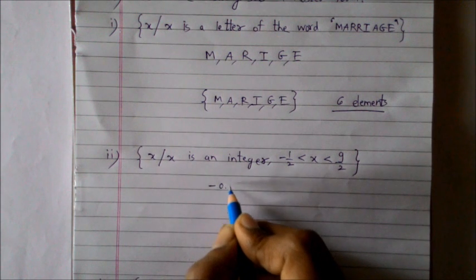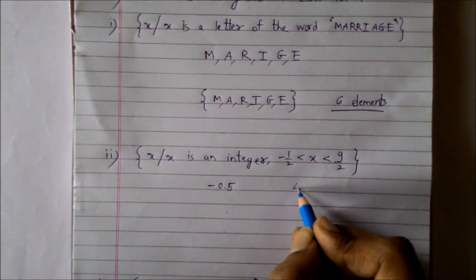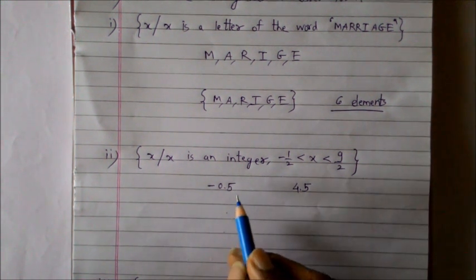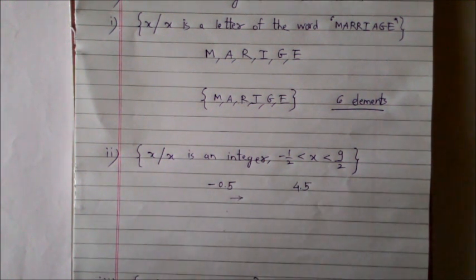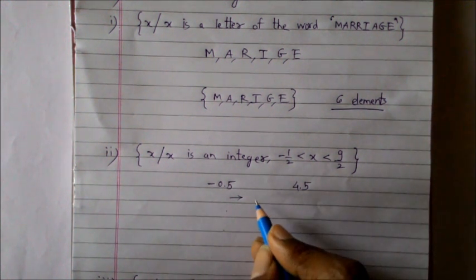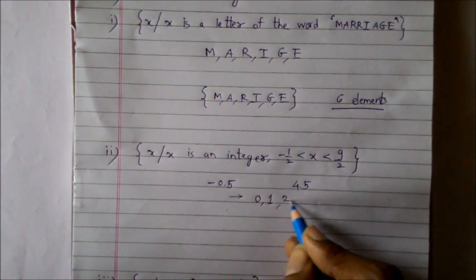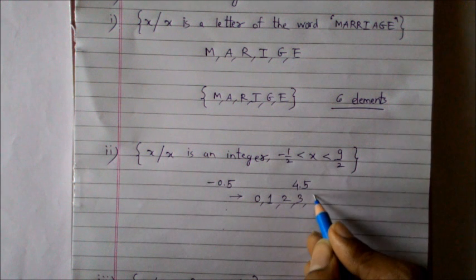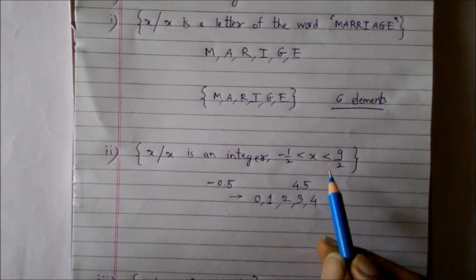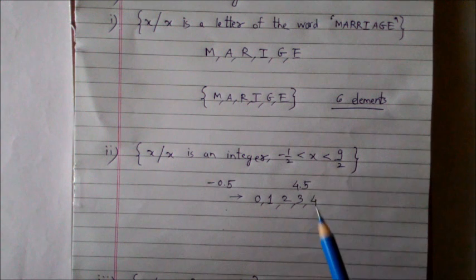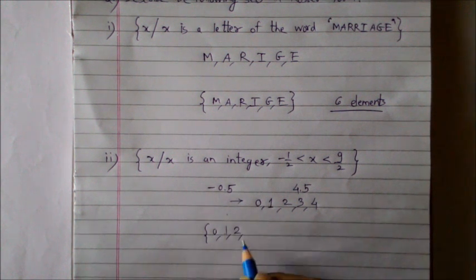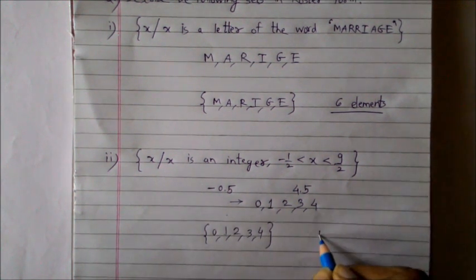The first step should be writing down minus one by two and nine by two in their decimal formats. So minus one by two will be minus 0.5 and nine by two will be 4.5. Now I want to start from minus 0.5 and go to the right hand side of the real number line. The immediate integer which is greater than minus 0.5 is zero, then one, then two, three, and four. I'm not writing down the next integer which is five because x should be less than 4.5. So this particular set will have five elements which will be zero, one, two, three, and four.